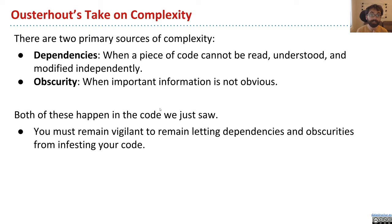So to wrap up this video, one of the things that Ousterhout mentions in terms of what he thinks complexity is, is that he says there's two primary sources of complexity. One is dependencies. It's when a piece of code cannot be read, understood, and modified independently. And secondly, there's obscurity, when there's important information that is not obvious to the reader. And both of those happen in the code that we just saw.